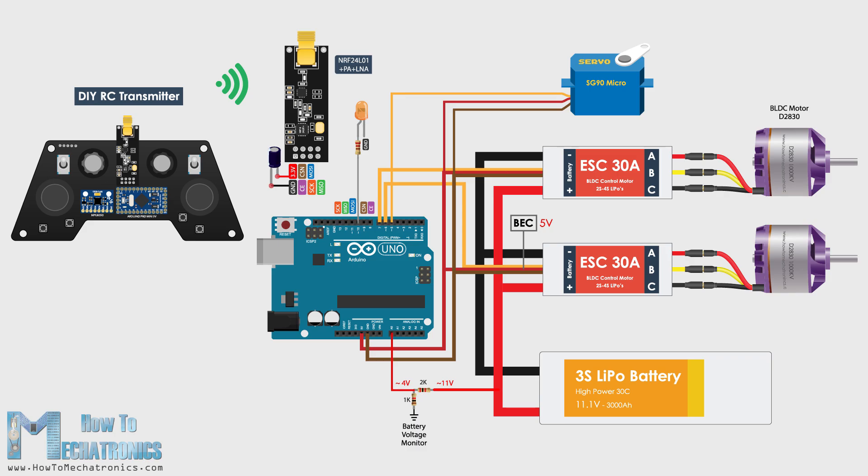So the brain of this hovercraft is an Arduino board. With the Arduino we can easily control the servo as well as the two brushless motors using the two electronic speed controllers or ESCs. For powering the BLDC motors I will use a 3S LiPo battery which provides around 11V and for powering the Arduino we can use the regulated 5V which the ESCs provide through their battery eliminator circuit feature. For the wireless communication I will use the NRF24L01 transceiver module which if used with an amplified antenna can have a stable range of up to 700 meters in open space.